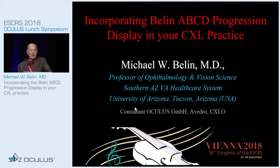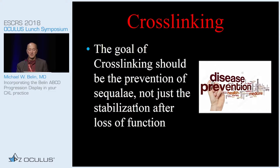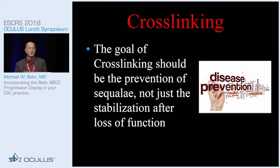I'm going to be talking about the Belin ABCD progression display for keratoconus. If you really think about crosslinking, the goal should really be the prevention of sequelae, not just the preservation of lost vision — not stabilization after we've lost vision, but to identify disease early enough that we prevent visual loss.